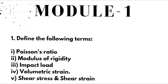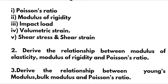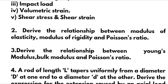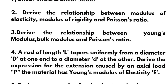In Module 1, we have theoretical portions like: define the following terms — Poisson's ratio, modulus of rigidity, impact load, volumetric strain, shear stress, and shear strain. These are definition parts which you can easily go through. A super important question is: derive the relationship between modulus of elasticity (Young's modulus), modulus of rigidity, and Poisson's ratio. This is a 10-mark question. Next, derive the relationship between Young's modulus, bulk modulus, and Poisson's ratio. You should necessarily practice both these derivations.